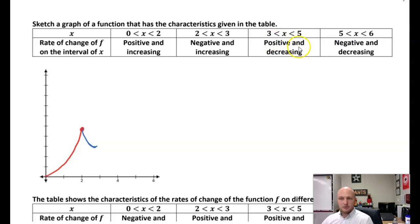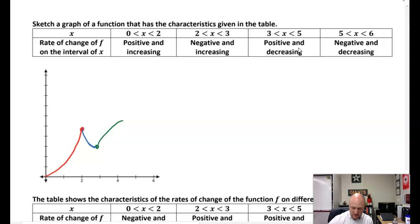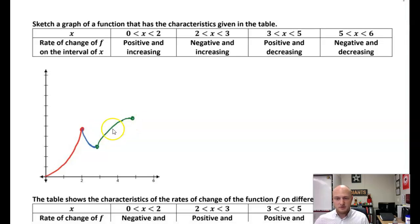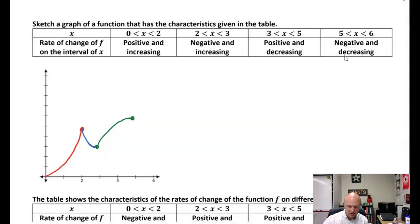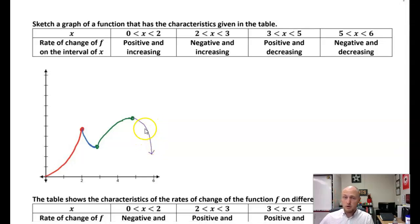The next one is positive and decreasing on three to five. I want a graph that's positive but decreasing — so it's going to be going up and then decreasing. I do have a positive slope, but I'm getting less and less positive as I go — my intervals are getting less and less steep. And then lastly, negative and decreasing on five to six. It's negative and my slopes are getting more and more negative or more and more steep in the negative direction. Notice a decreasing rate of change produces a concave down graph.